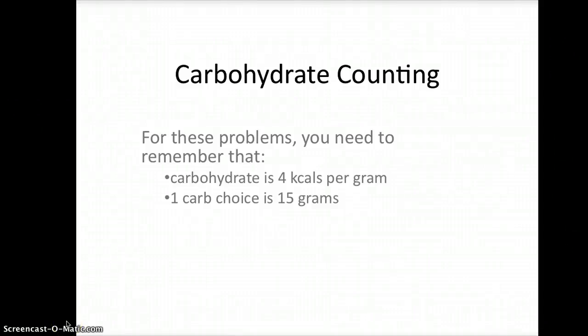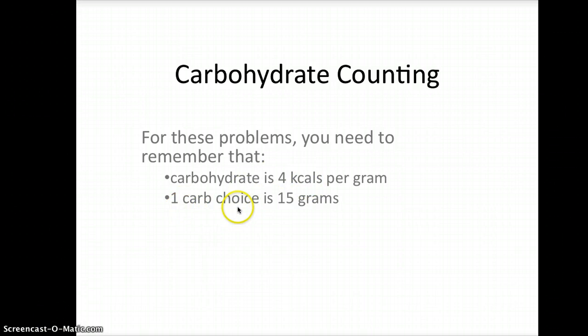Here's how you figure out the number of carb choices allowed with carbohydrate counting. For these problems, you need to remember that carbohydrate is 4 calories per gram, and one carb choice is 15 grams.